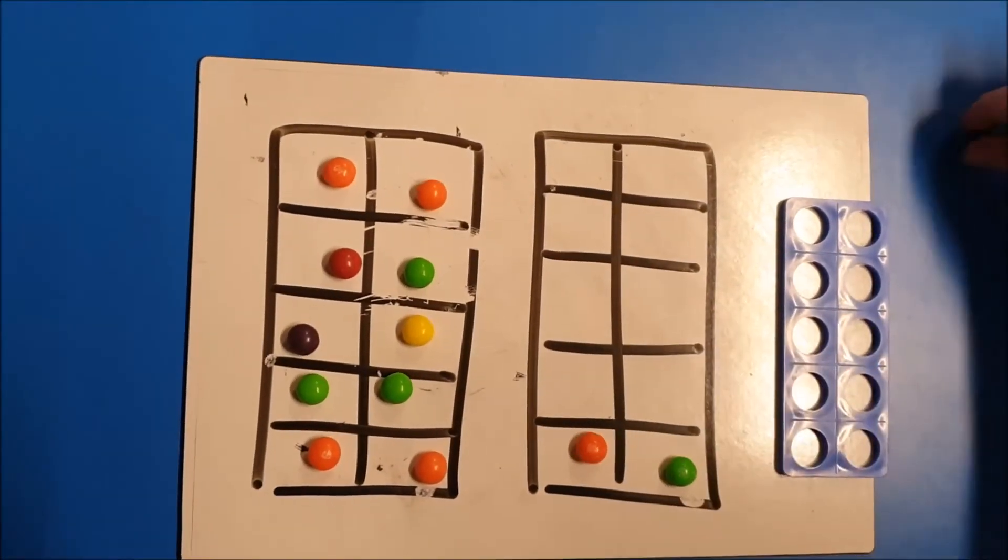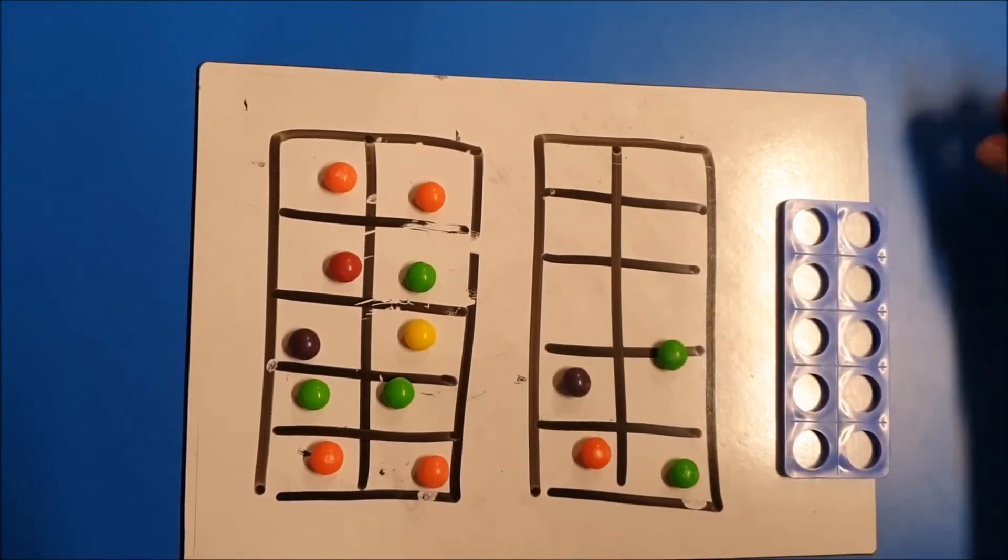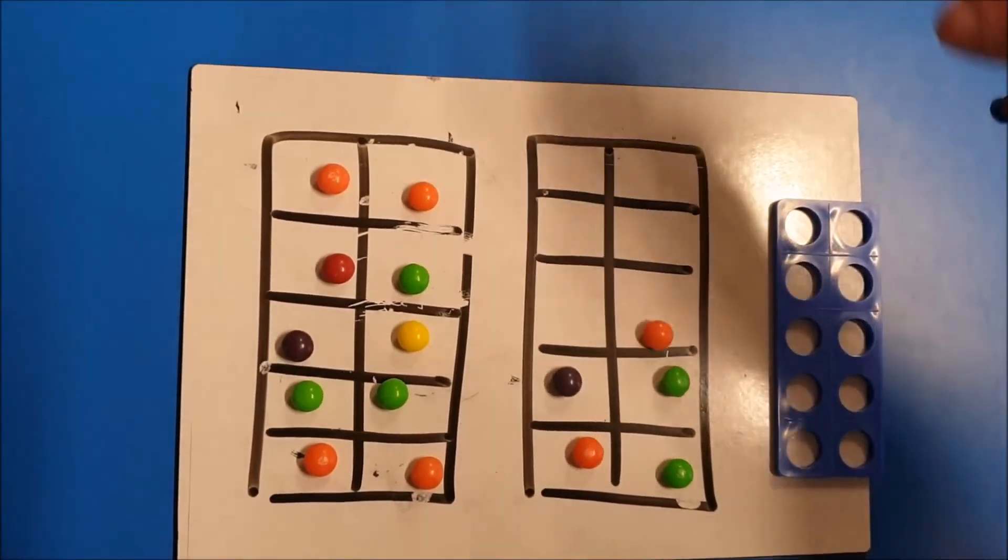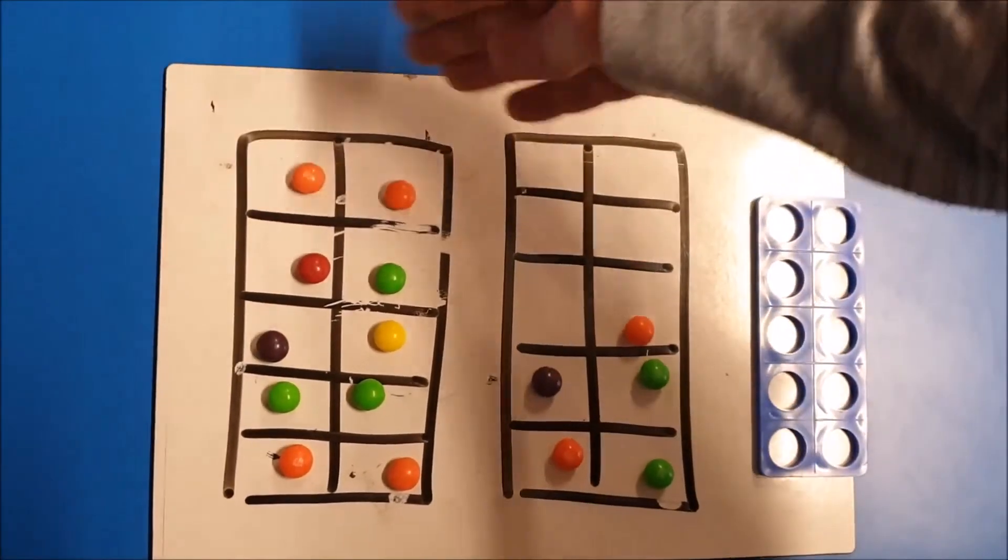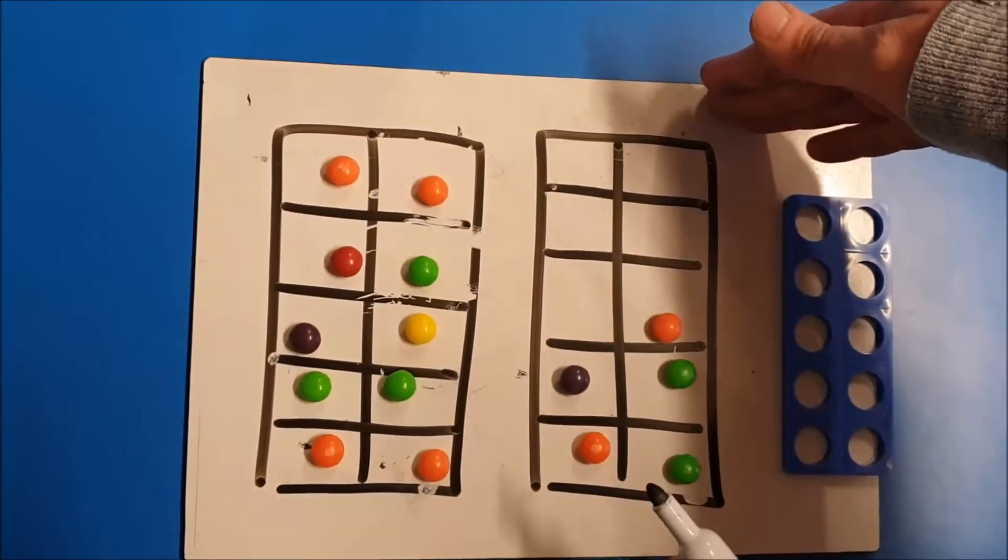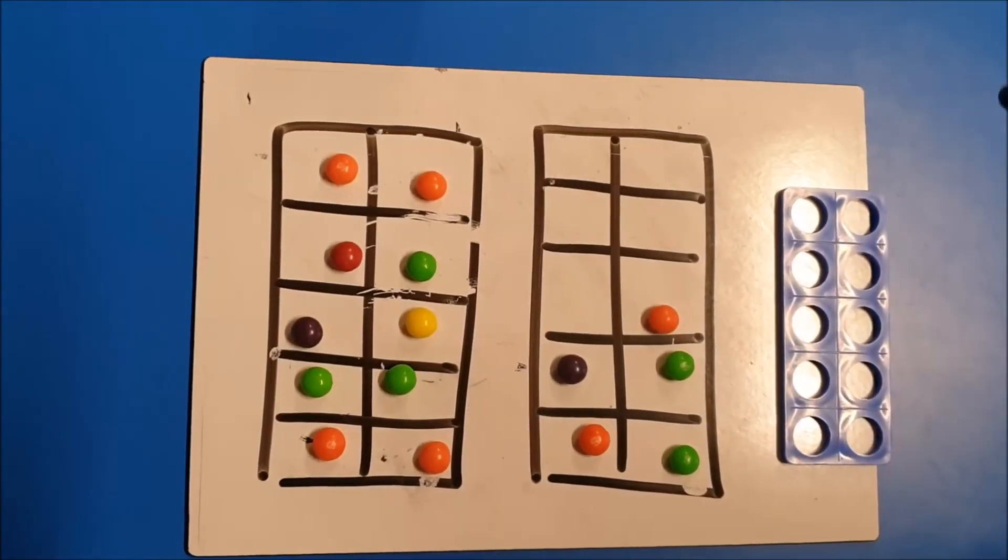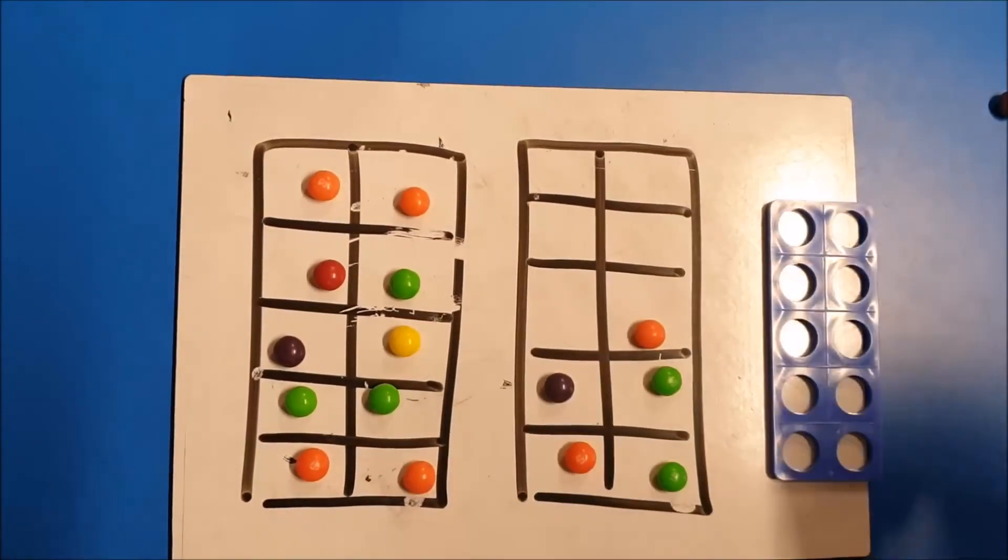And then adding on another 3 like that. And all that will do is, similar to the base 10, it allows the child to see the layout of there's a 10 and then a 5, and working out that that's 15 a bit quicker than counting from 1 all the way to 15.